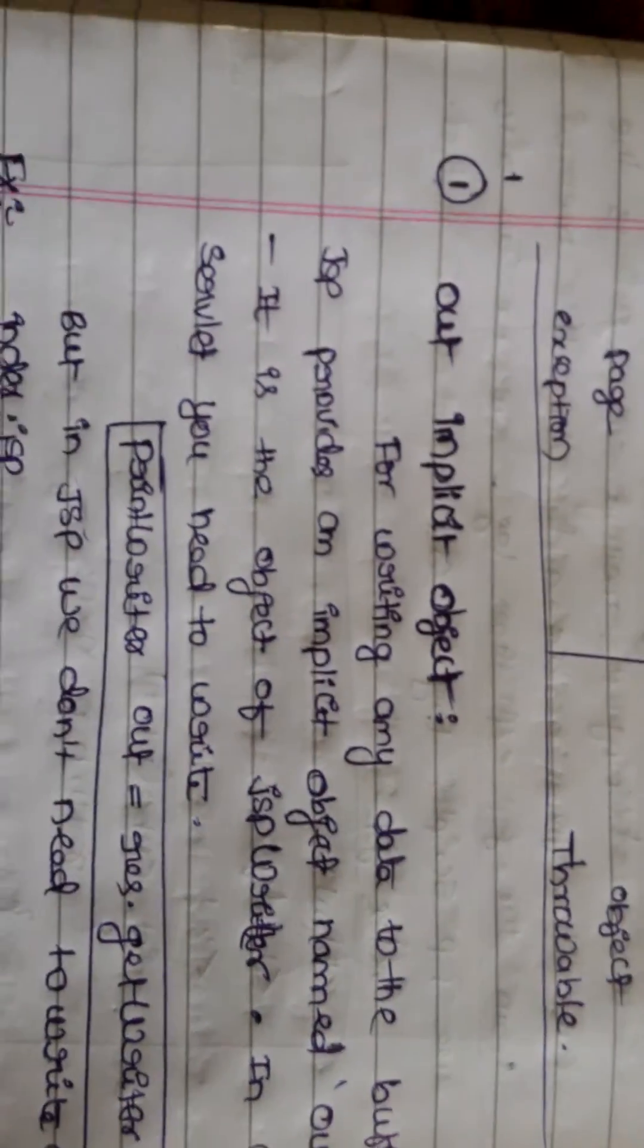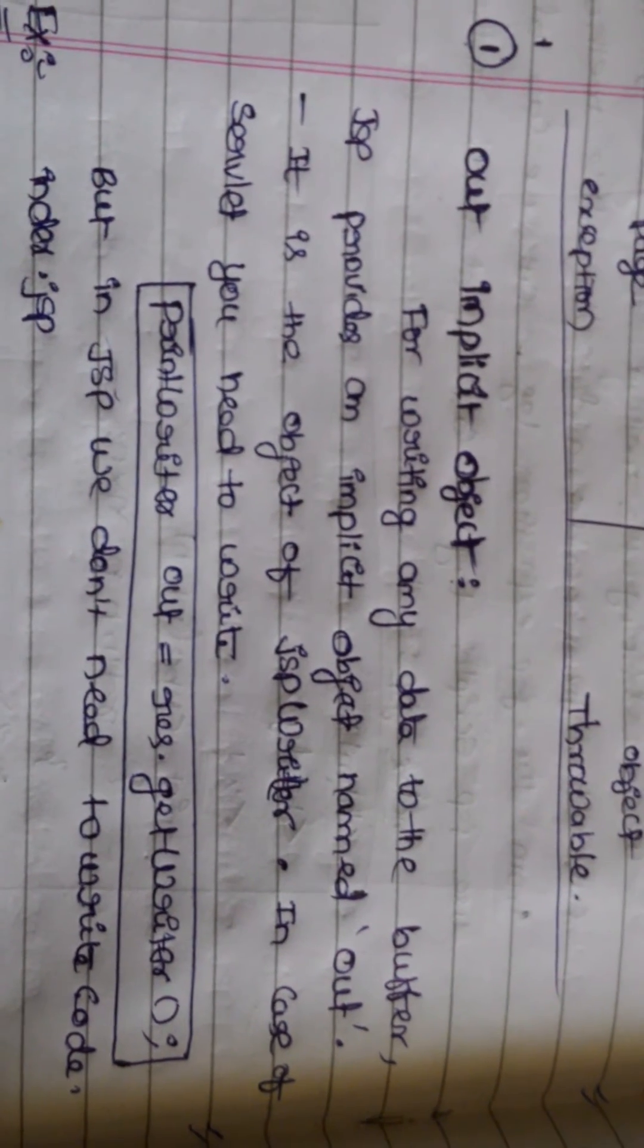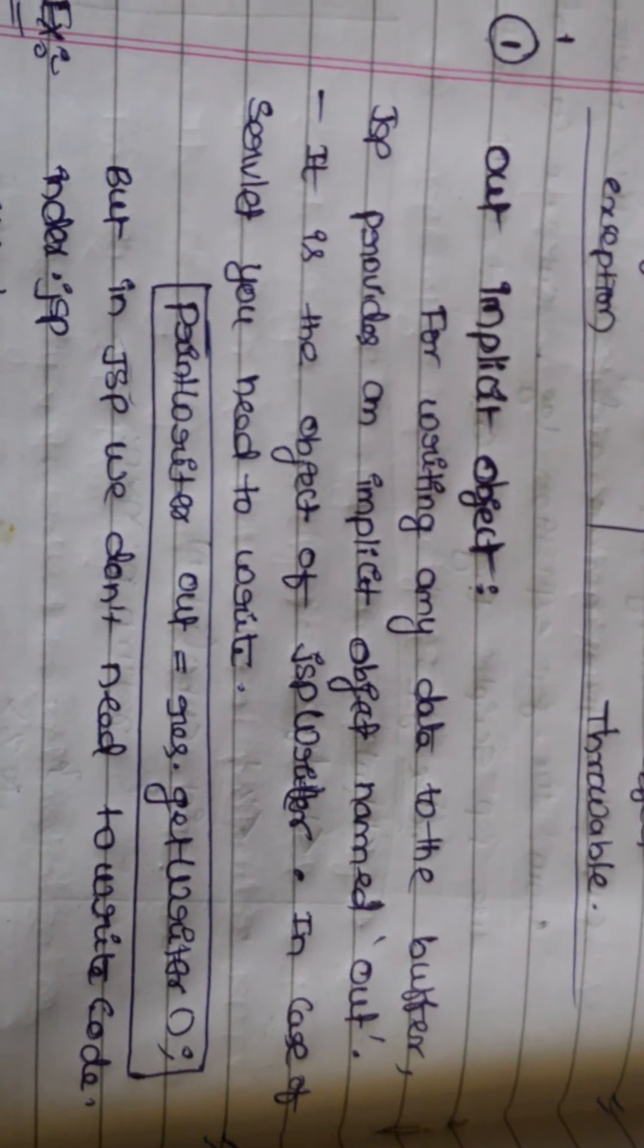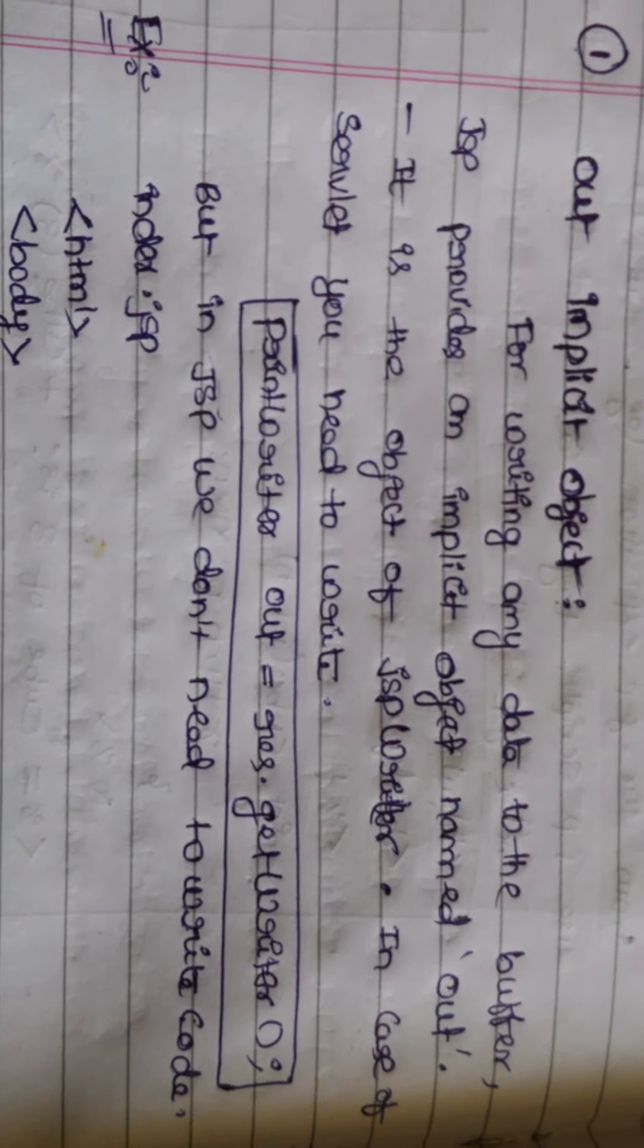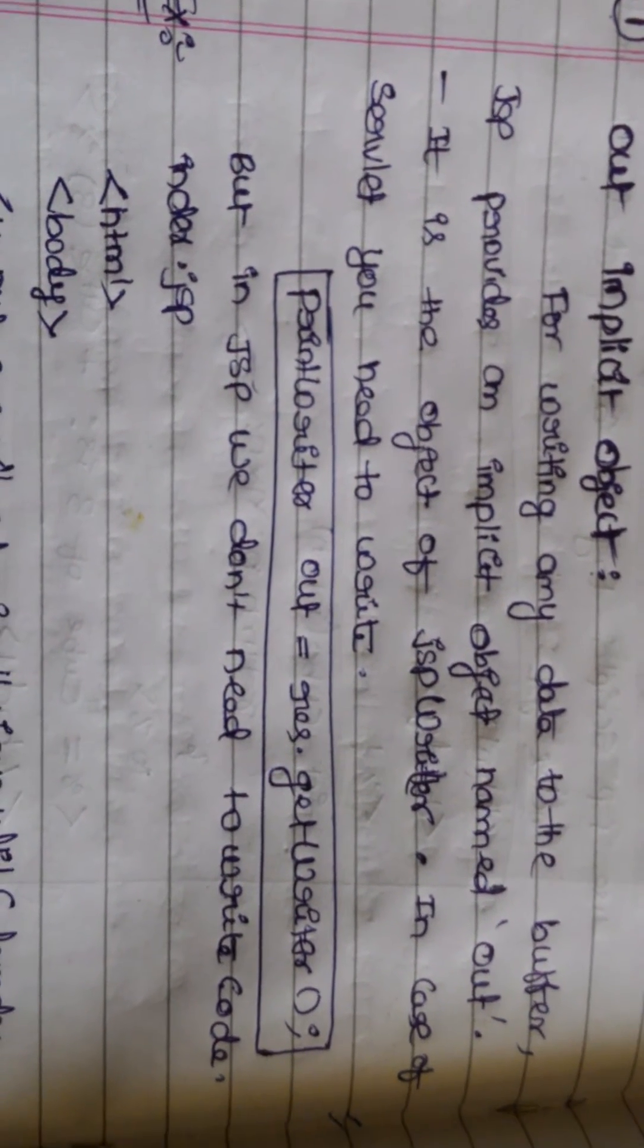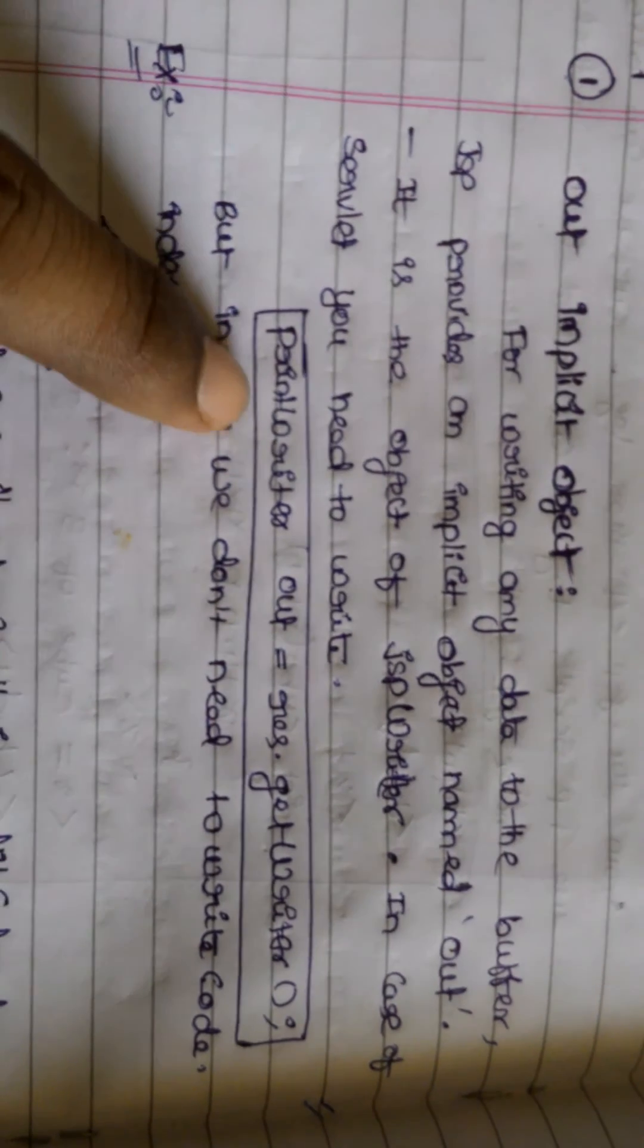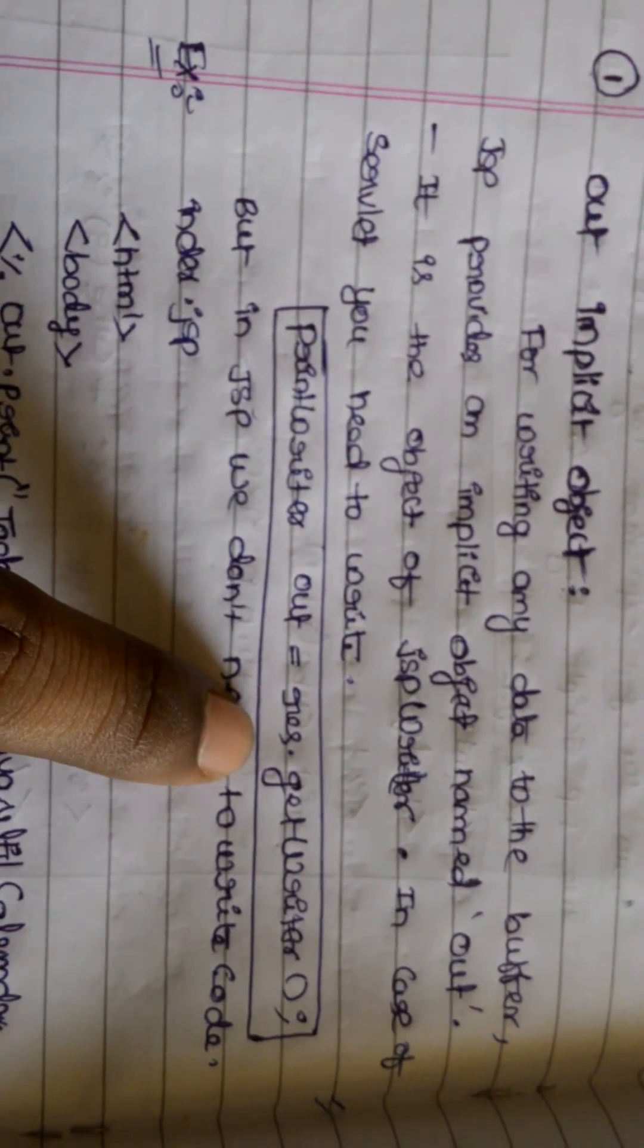First, the out implicit object. For writing any data, JSP provides an implicit object named out. It is the object of JSP writer. In case of servlet, we need to write something like PrintWriter out = response.getWriter().